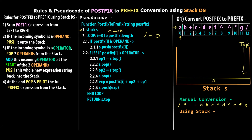We move forward; i becomes 1. postfix[1] is 'b', also an operand, so we simply push 'b' onto the stack — 'b' is the new top. Then i becomes 2. We check postfix[2]: it is a '+' operator, so 2.1 will not execute. Step 2.2 will be executed.